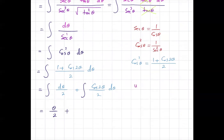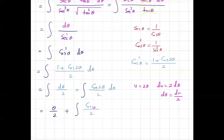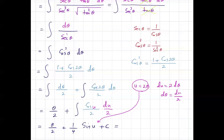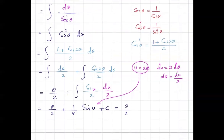Let u equal 2 theta, so d u equals 2 d theta, meaning d theta equals d u divided by 2. The second integral becomes the integral of cosine u divided by 2 times d u divided by 2, giving a factor of 4 in the denominator. So the result is theta divided by 2 plus one fourth sine of u plus C. Substituting back u equals 2 theta, we get theta divided by 2 plus one fourth sine of 2 theta plus C.